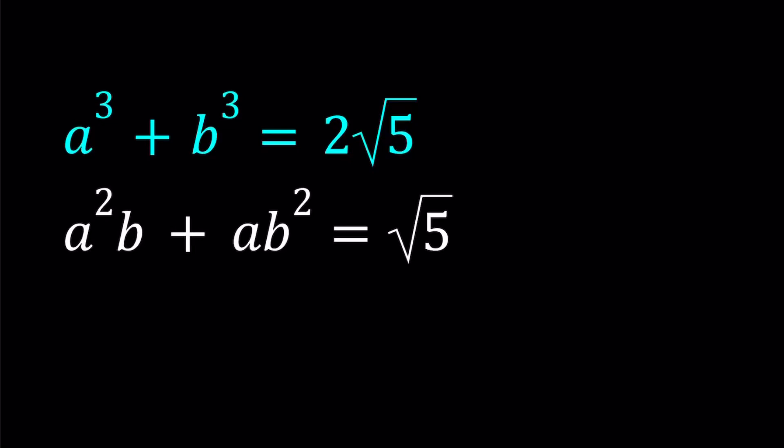Hello everyone. In this video, we're going to be solving a polynomial system. We have a³ + b³ = 2√5, a²b + ab² = √5, and we're going to be solving for a and b values. I'll be presenting two methods. Let's go ahead and start with the first one.